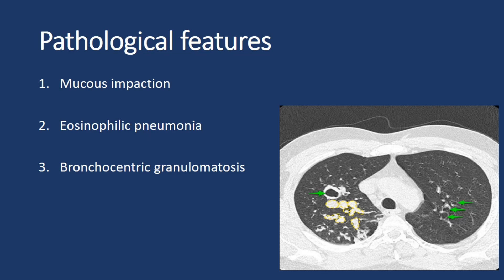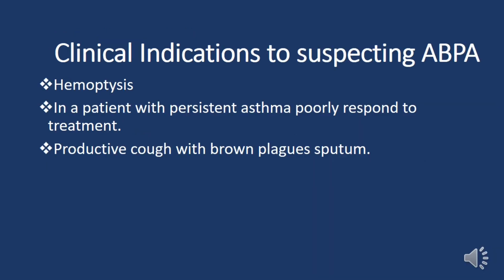Pathological features of ABPA include: firstly, mucus impaction — the accumulation of mucus within the airways causing airflow obstruction and respiratory symptoms. Secondly, eosinophilic pneumonia, reflecting infiltration of eosinophils into the lung tissue indicative of an allergic response. Lastly, bronchocentric granulomatosis may be present, with granuloma formation around the bronchi, further complicating the inflammatory response.